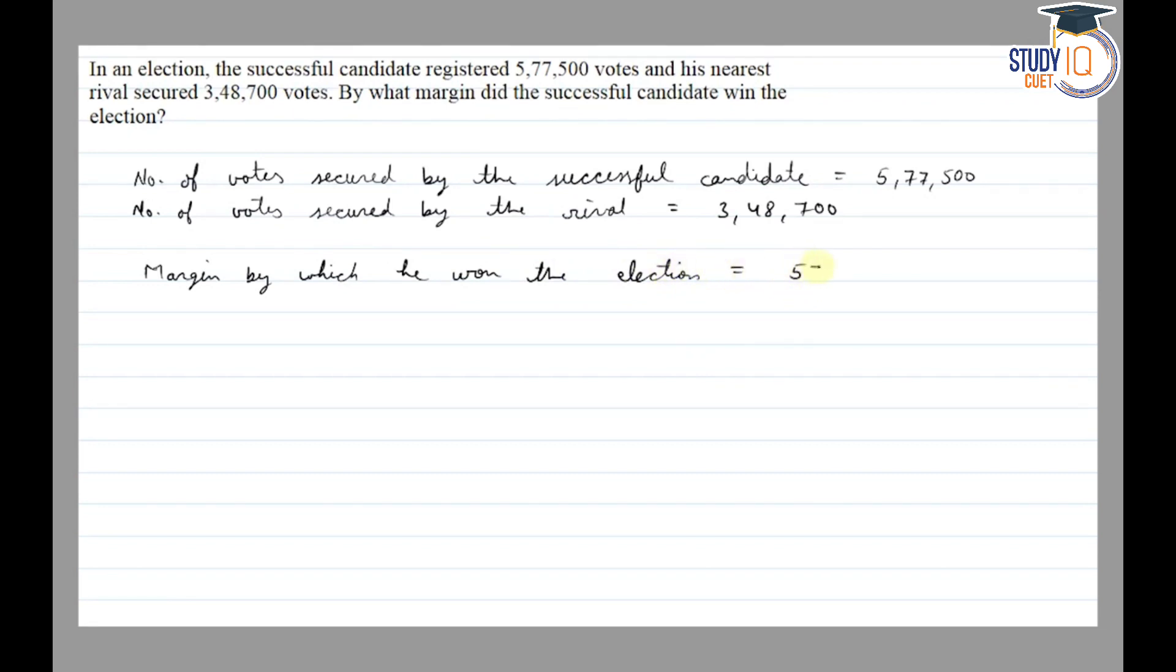5,77,500 minus 3,48,700 equals 2,28,800 votes. So the successful candidate won the election by 2,28,800 votes. That's our final answer, thank you.